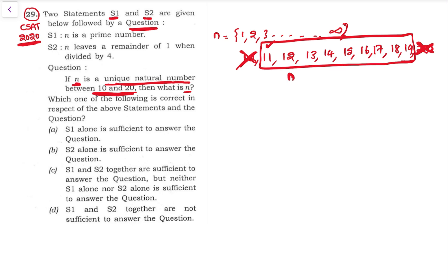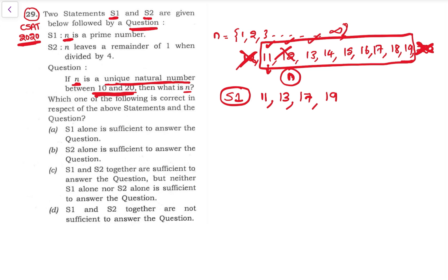Whether it is 11, 12, or 13 — we need to find the unique value. Now let's check with Statement 1 alone: n is a prime number. 11 is prime, 12 is not, 13 is prime, 14 is not, 15 is not, 16 is not, 17 is prime, 18 is not, 19 is prime. So n could be 11, 13, 17, or 19 — we cannot say. Statement 1 alone is not sufficient.